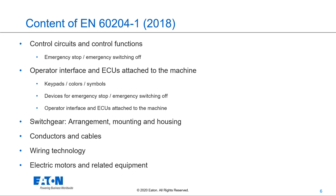The standard also covers operator interfaces and ECUs attached to the machine, including colors and symbols for operation interfaces. Devices for emergency stop and emergency switching off functions are described. Additionally, switchgear, the cabinet itself, arrangement, mounting, and housing, the selection of conductors and cables, wiring technologies, and electrical motors and related equipment are all included.